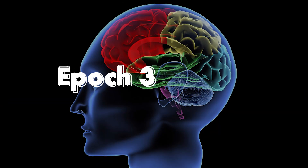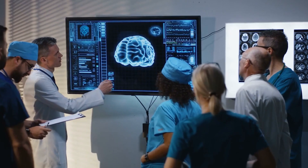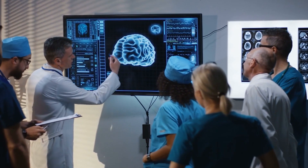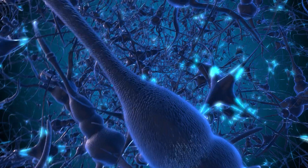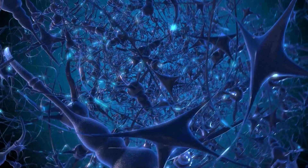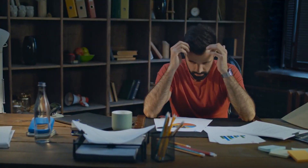Epoch 3: Brains. The third epoch refers to the development of the brain, bringing about the rise of intelligent life and consciousness. The brain represents nature's advancement from simple survival mechanisms to complex thought, emotion, and self-awareness.